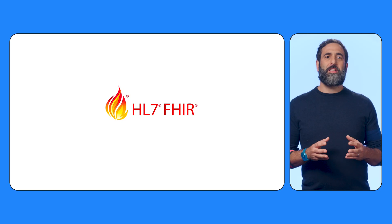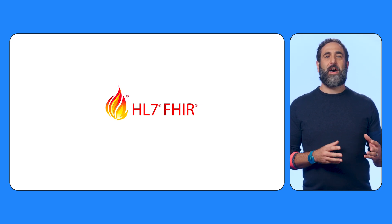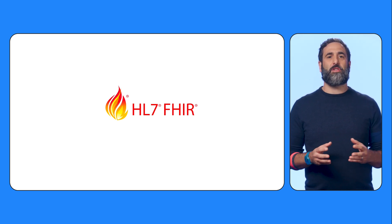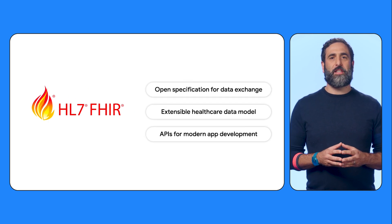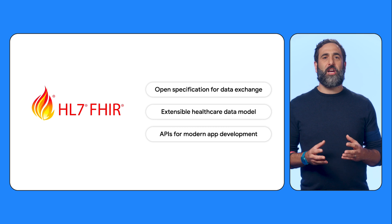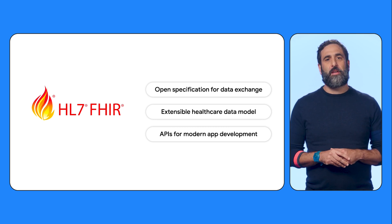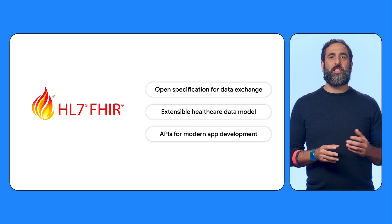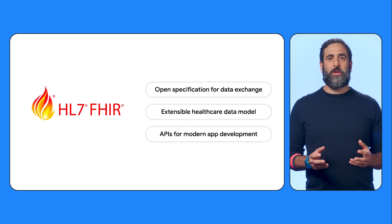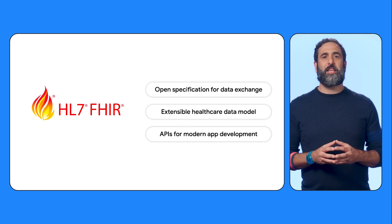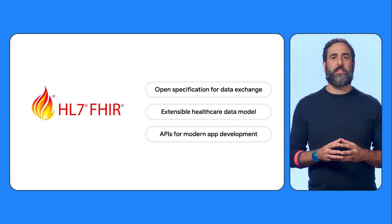To understand OpenHealth Stack, it's important to first understand FHIR, or Fast Healthcare Interoperability Resources. FHIR is an open modern healthcare standard from HL7 designed to improve data sharing and collaboration among different healthcare systems. The FHIR specification defines a set of resources that provides an extensible data model, RESTful APIs, and other features that make it a good foundation for building digital health applications for a diverse set of use cases.